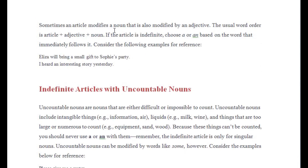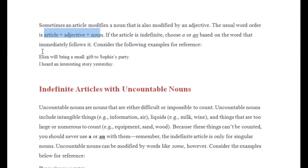Sometimes an article modifies a noun that is also modified by an adjective. The usual word order is: article plus adjective plus noun. If the article is indefinite — the indefinite articles are 'a' and 'an' — choose 'a' or 'an' based on the word that immediately follows it. Consider the following examples for reference. The article can also modify an adjective and the noun; usually the form is article plus adjective plus noun.